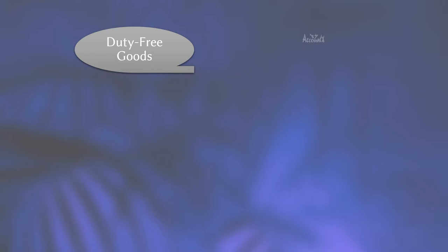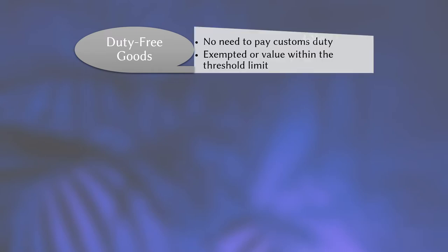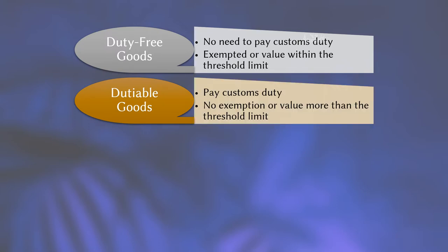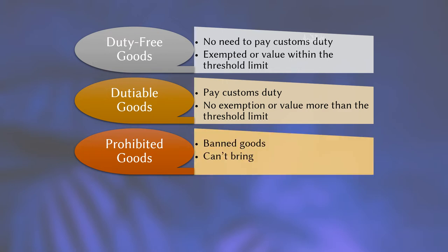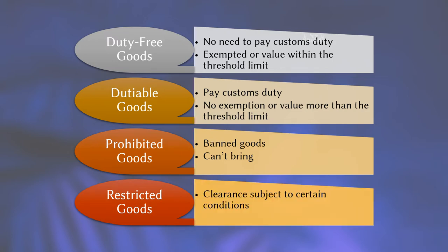Let's now briefly understand the meaning of all these four types of goods, starting with duty free goods. Duty free goods are goods on which you don't have to pay any customs duty, because either they are exempted or the value is within some threshold limit. Then we have dutiable goods — goods on which you would be required to pay customs duty because either they are not exempted or the value is more than a certain threshold limit. This threshold limit is going to vary for different categories of goods. Third, we have prohibited goods — goods which are banned and which you cannot carry. Fourth, restricted goods — clearance of such goods would be subject to the satisfaction of certain conditions.